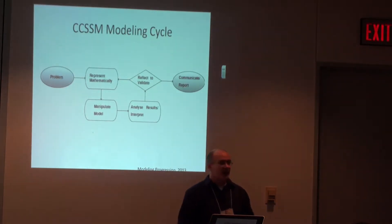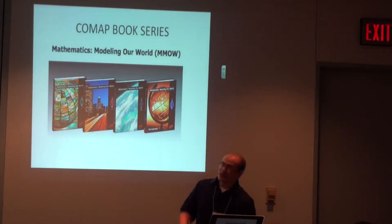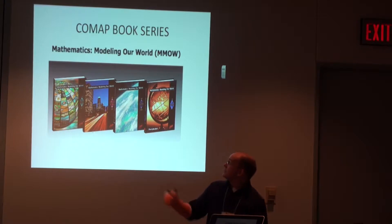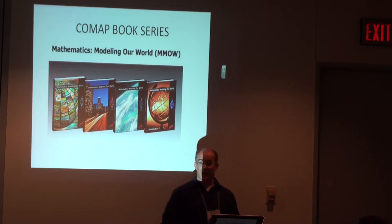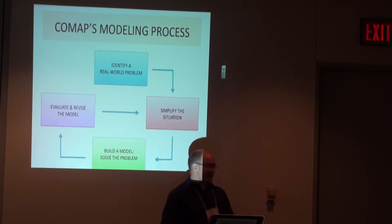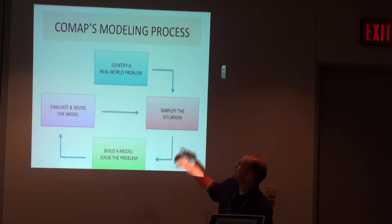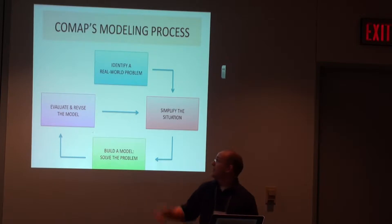The Common Core has a little diagram about this process. I like COMAP's a little better. It's a book series called Modeling Our World. They chose to go down to four steps — and we figured if four steps are good enough for Polya, four steps can be good enough for us. They did combine some stuff, but I like their model. As teachers we can just think about this pretty simply: that four-step process — identify a real-world problem, simplify the situation, build a model and solve the problem in the math world, and then bring it back into the real world, evaluating and revising the model to see what we got.